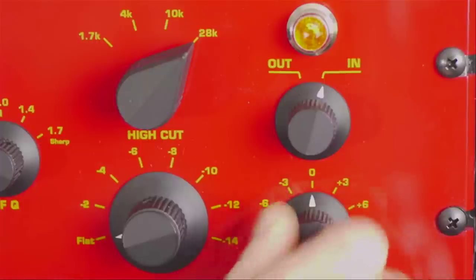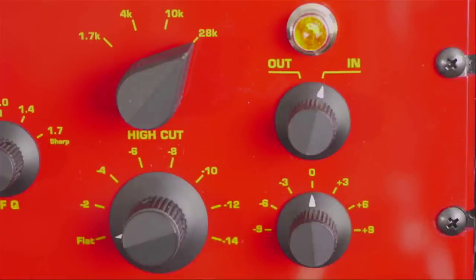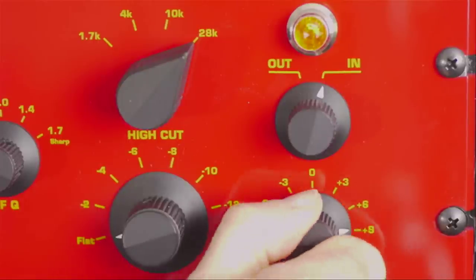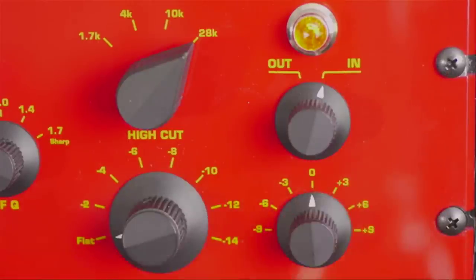And these are in very precise 3 dB increments here: minus three, minus six, minus nine. On the other hand, if you're cutting significantly and the level's dropped a lot, you can increase the gain by plus three, plus six, or plus nine. The majority of time, you'll leave it on the zero position.